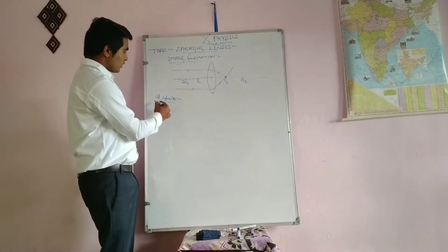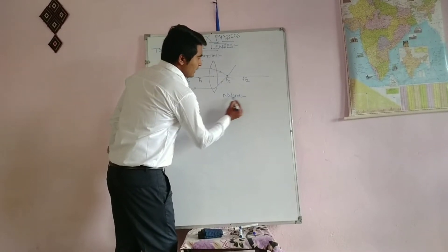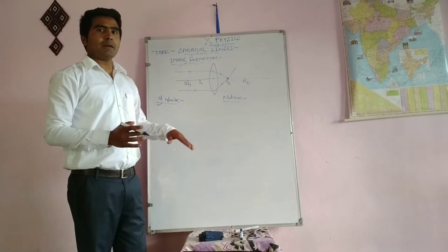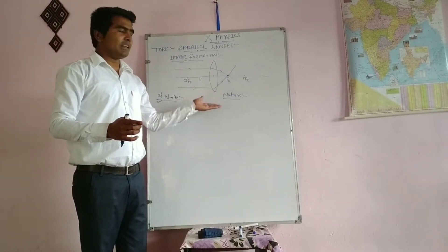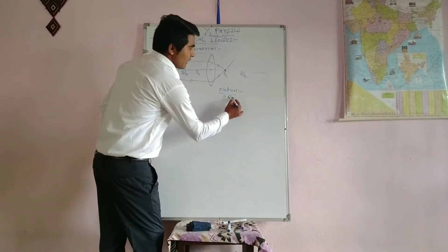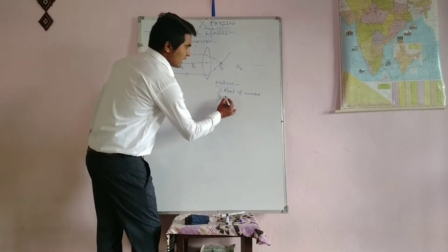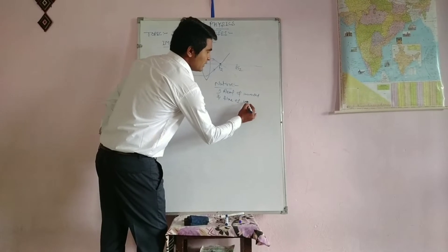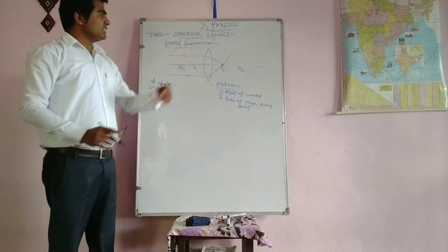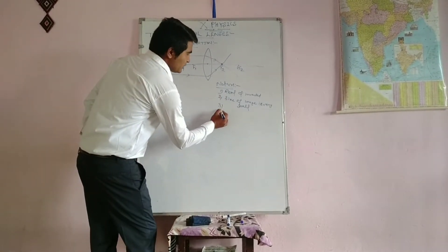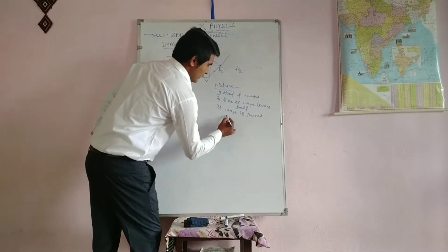When light rays come parallel to the principal axis or come from infinite, the image is formed at F2. There are two types of images: real and virtual. A real image is always inverted — light rays after refraction actually meet at a point. So the image is real and inverted. The size of the image is very small, almost a point.